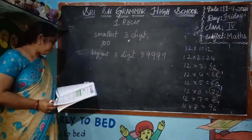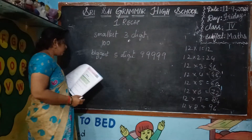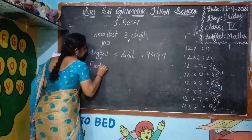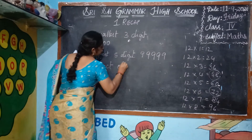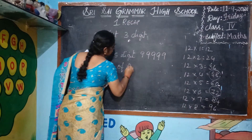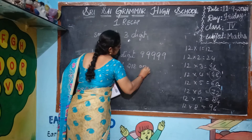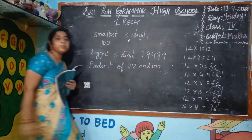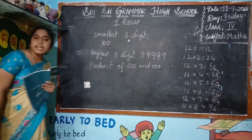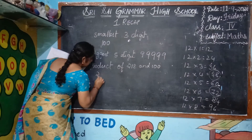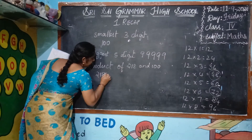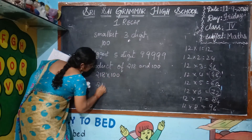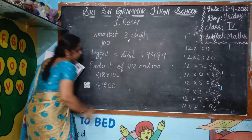Okay, now product. Product of 218 and 100. Product means multiplication — 218 into 100. That is 21800.